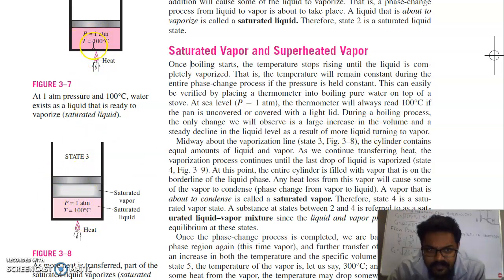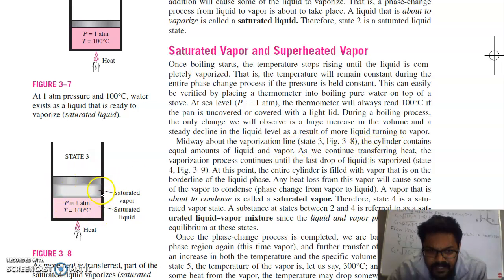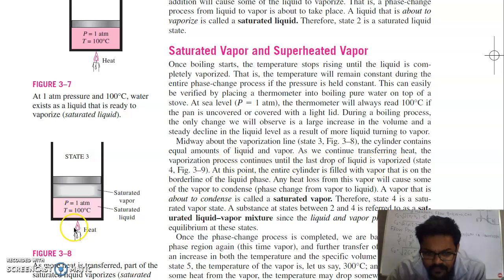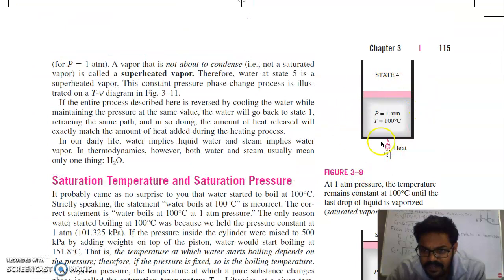You can see in this diagram — comparing with the earlier diagram where you had pure liquid. Here the level of liquid will decrease because some amount of liquid has converted to vapour. At the midway point, state 3, the complete liquid has not yet converted to vapour. Part of the liquid has converted into vapour, and the cylinder contains equal amounts of liquid and vapour. As we continue transferring heat, the vaporisation process continues until the last drop of liquid is vaporised.